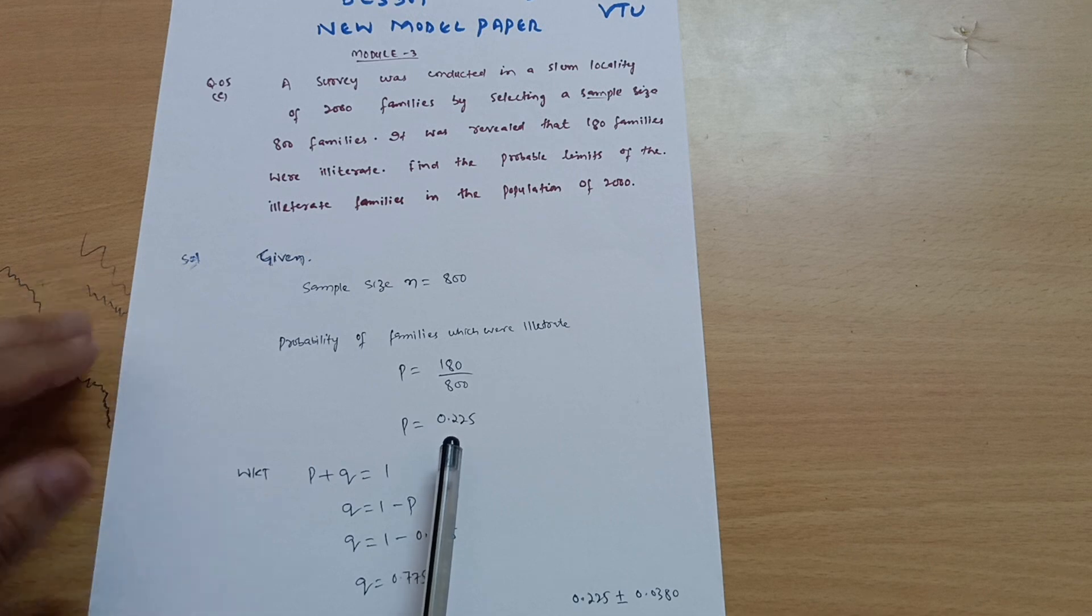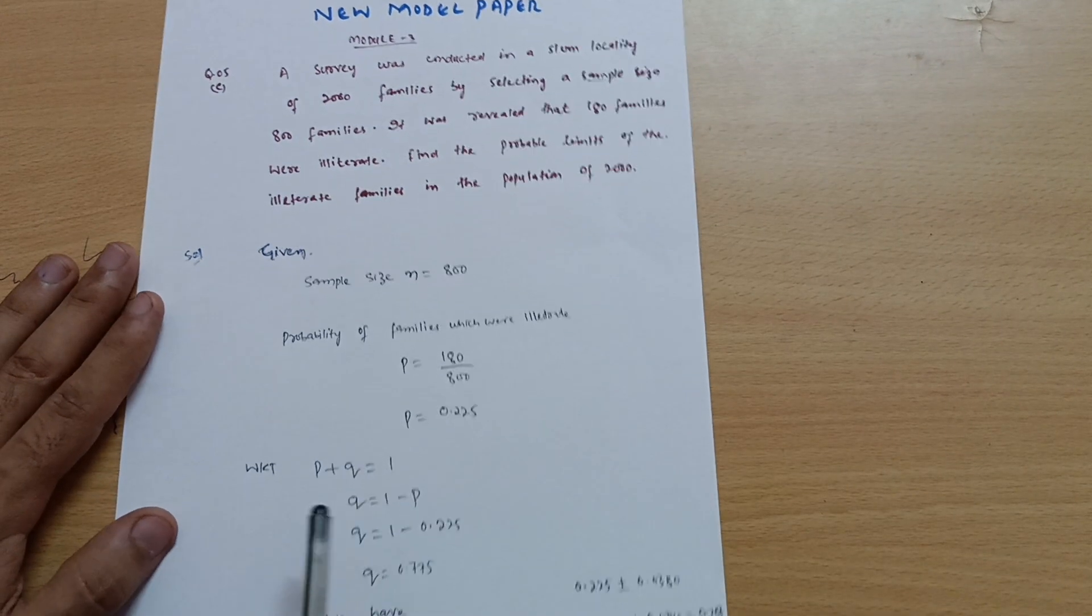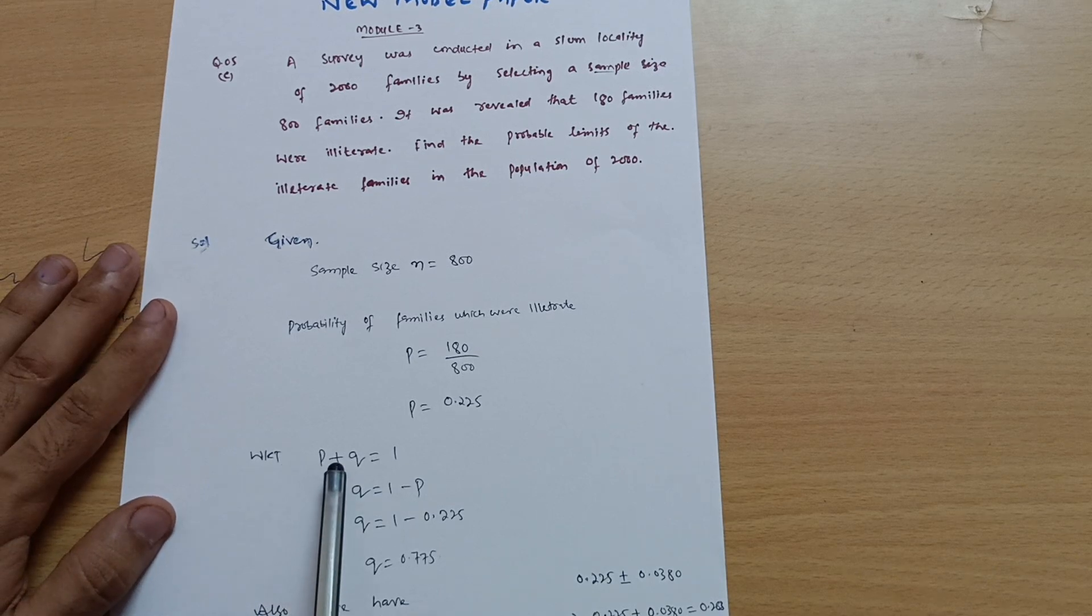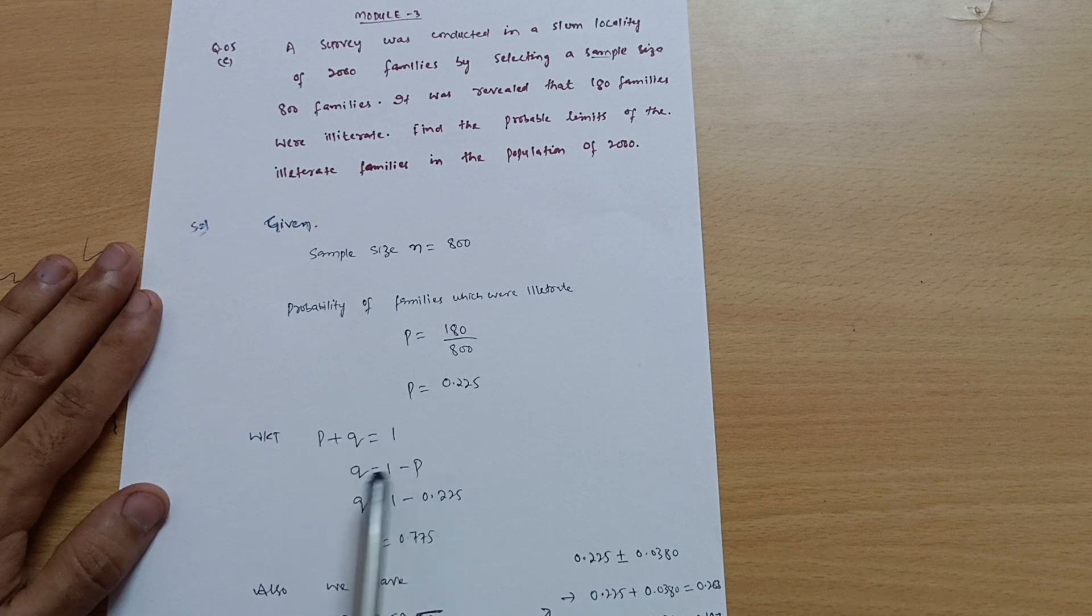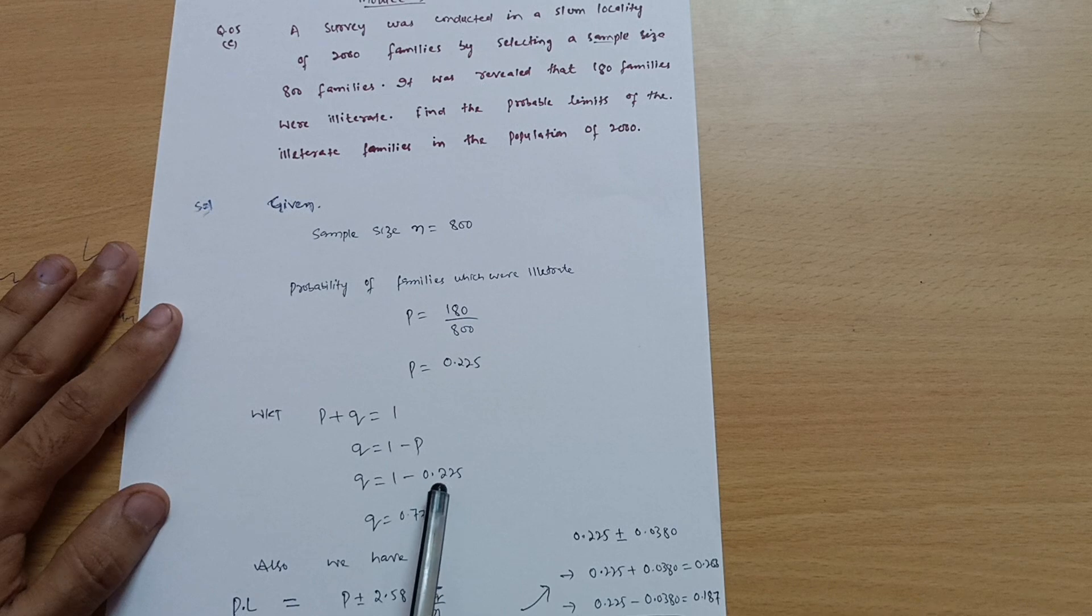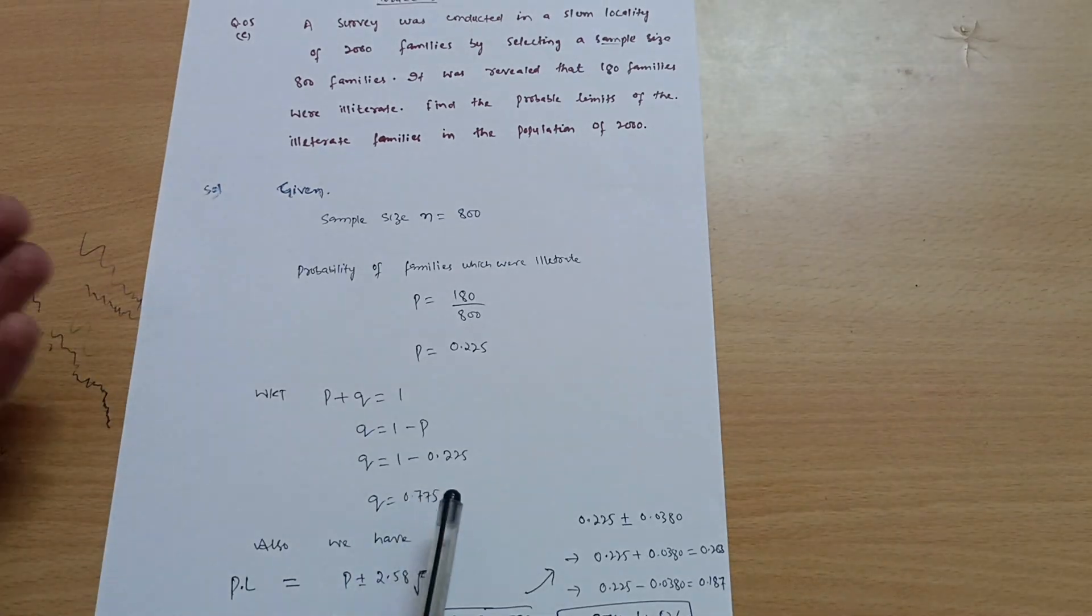I'm not calculating it over here just because the video will get too long. We know that probability of event plus probability of not an event is equal to 1. So q is equal to 1 minus p. q equals 1 minus 0.225, so q is equal to 0.775.